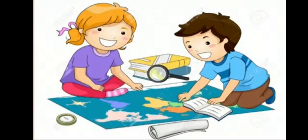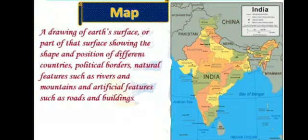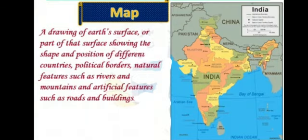Directions are always parallel to the ground. That is why a map must always be aligned to the local directions — this makes it easier for us to understand the map and the region. Now, look at the picture — this is India's map. A map is a drawing of the Earth's surface or part of that surface, showing the shape and position of different countries, political borders, natural features such as rivers and mountains, and artificial features such as roads and buildings. Maps are used in many ways and are also helpful in studies.